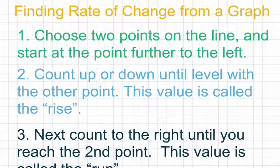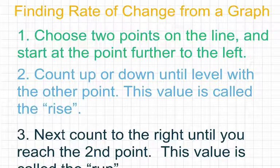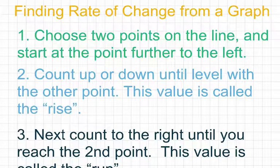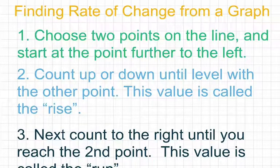Finding rate of change from a graph: The first step is to choose two points on the line. Oftentimes lines will have multiple points on them. It doesn't matter which two points you choose, but you do need to choose two points that are on the line. Of those two points, you want to start at the point that's further to the left. Starting at the one further to the right will make things more confusing later on. From that point further to the left — this is step two — you want to count straight up or straight down until you are level with the other point.